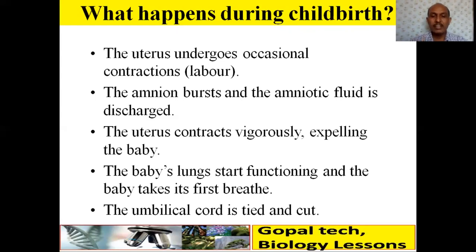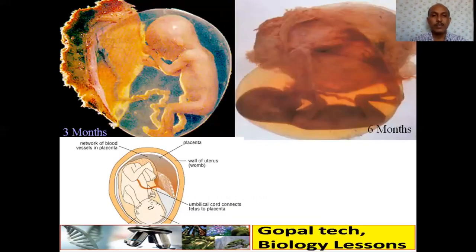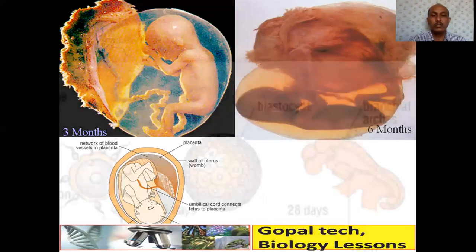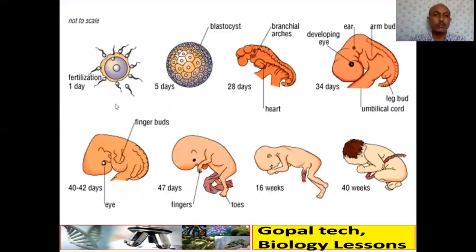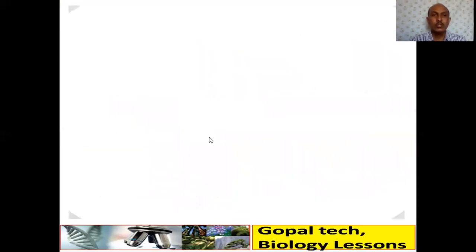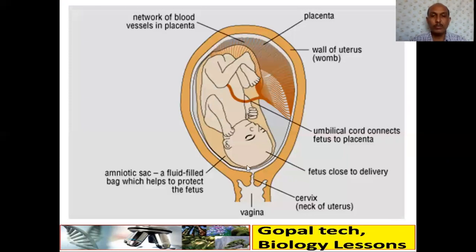The umbilical cord is tied and cut, and the baby is separated from the mother. So from fertilization on day one through the entire 40-week process, the baby is fully developed. The amniotic sac filled with fluid helps protect the fetus throughout.